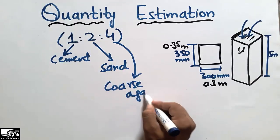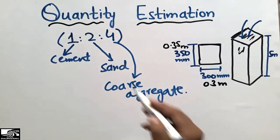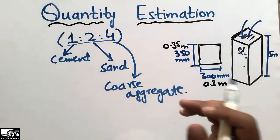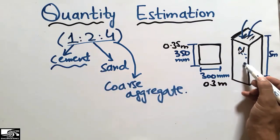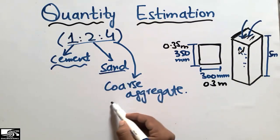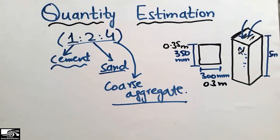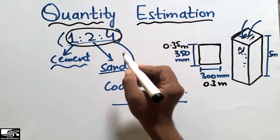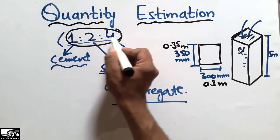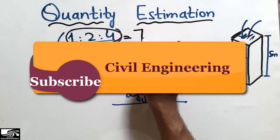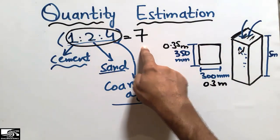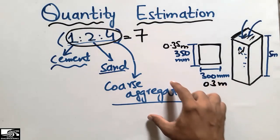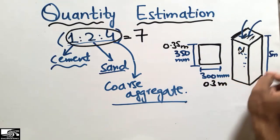This 1:2:4 ratio concrete is poured in this column and we want to find how much cement, sand, and coarse aggregate is used. First, we add 1 plus 2 plus 4 to get the total ratio, which equals 7. We will use this total ratio to find the quantity of each material.